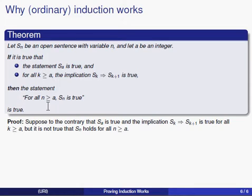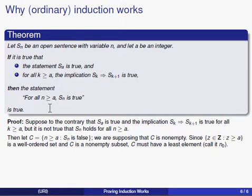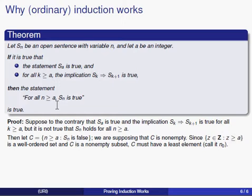We suppose that it's not true that S(n) holds for every n ≥ a. We're headed for a contradiction—that's our goal. Here's where well ordering comes into play. If S(n) is not necessarily true for every n ≥ a, then it must be the case that S(n) is false for some n ≥ a.